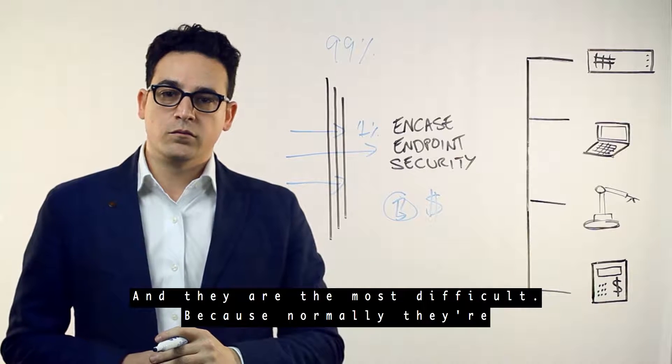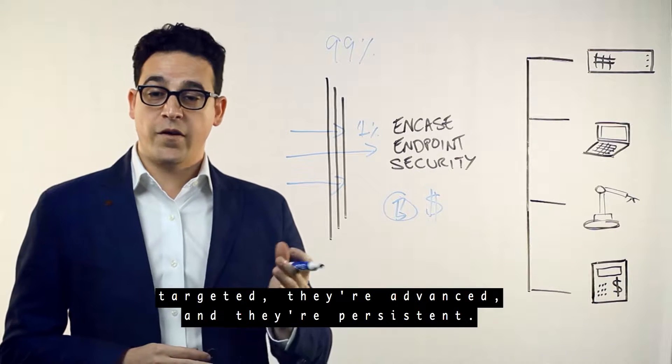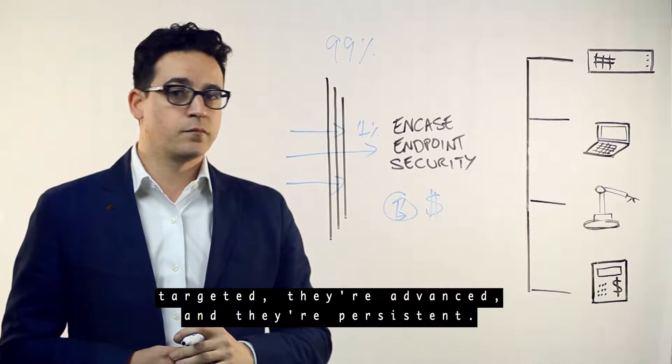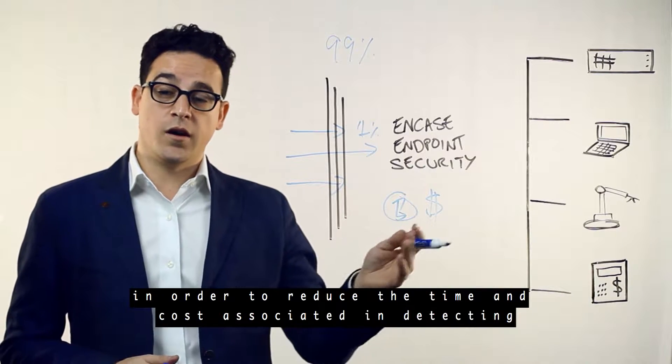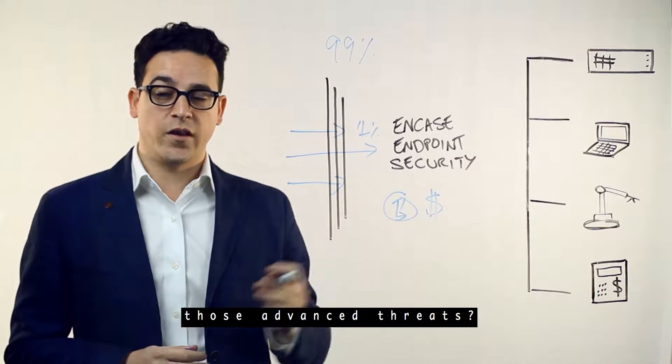And they are the most difficult because normally they're targeted, they're advanced, and they're persistent. So how can we get visibility into our environment in order to reduce the time and cost associated with detecting those advanced threats?